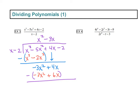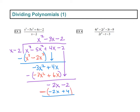4x minus 6x is negative 2x. Then we have to bring down that last term of negative 2. Again we look at just the first terms: x times what number gives us negative 2x? The x is already there, so we just need that negative 2. So minus 2. Then we multiply: negative 2 times x is negative 2x, and negative 2 times negative 2 is positive 4. Then we subtract. Negative 2x minus negative 2x is 0 — those cancel. Then negative 2 minus 4 is negative 6.